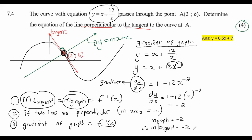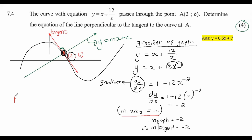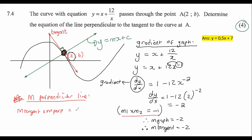Now because we know the gradient of the tangent, we can get the gradient of the perpendicular line. If two lines are perpendicular, when you multiply their gradients you get negative one. So: minus two multiplied by the gradient of the perpendicular line equals negative one. Therefore the perpendicular gradient is a half.